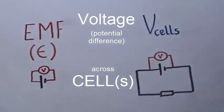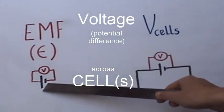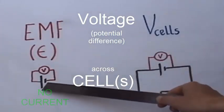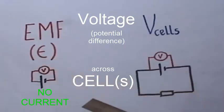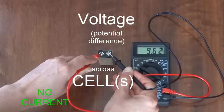But the difference is that when we measure EMF, we measure the voltage across the cell while the cell has no current flowing through it. For example, when the cell is just loose like that.